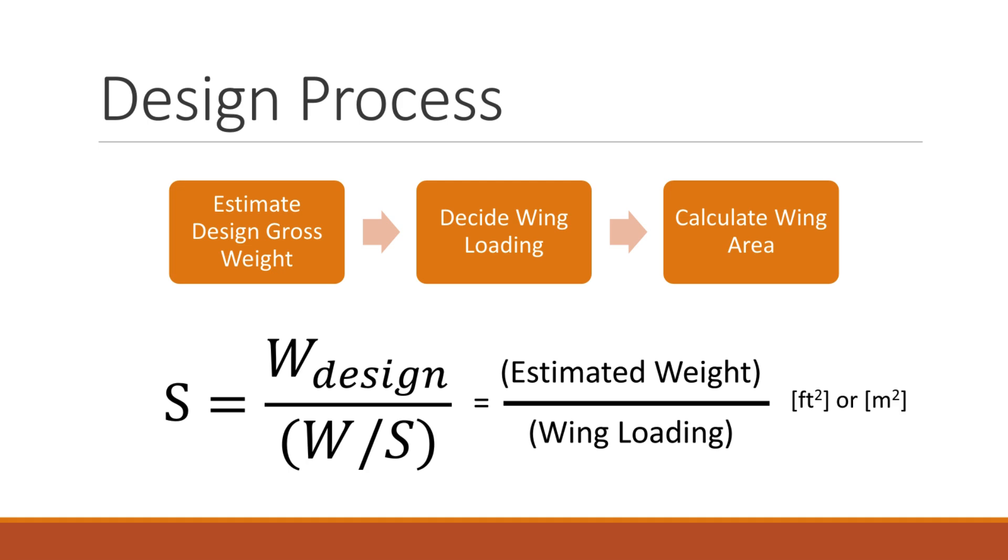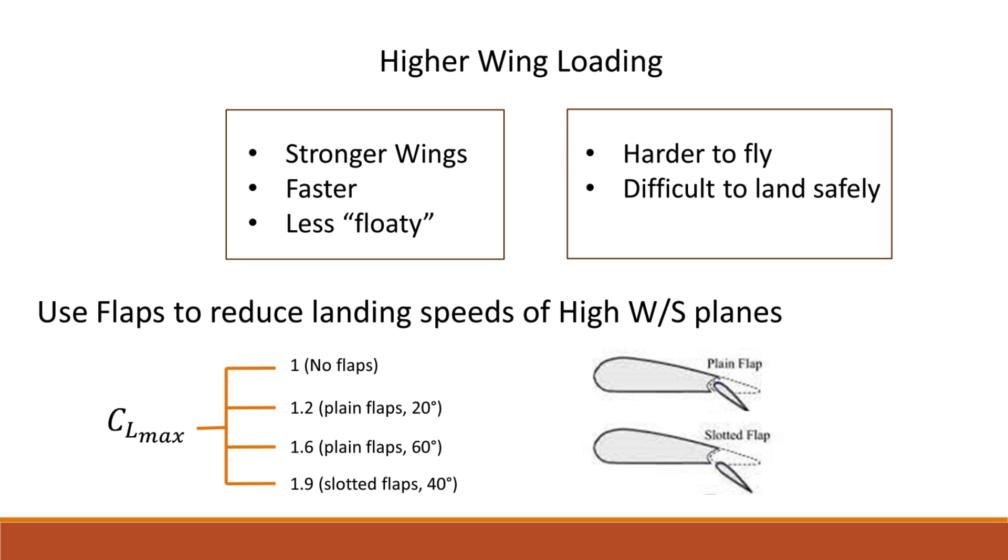Generally, higher wing loadings are better as they provide stronger wings, are faster, and less floaty. However, high wing loadings can cause a very high stall speed and landing speed, which makes the plane difficult to fly and land safely.